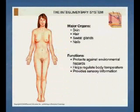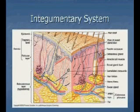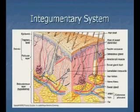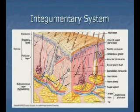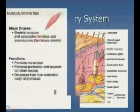The integumentary system will be covered as part of A&P Part I. The major organs located there include the skin, hair, sweat glands, and nails. Its functions are to protect against environmental hazards, help regulate body temperature, and provide sensory information. The integumentary system is further described in the illustration. Because this is an introductory lecture, I will not go into a lot of detail now — in subsequent lectures we will specifically address the integumentary system. Not only are there surface appendages related to the skin, but there is a whole network of anatomical structures lying below the skin that are important for us to recognize and understand.